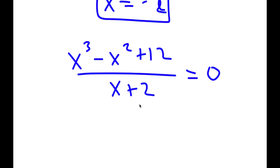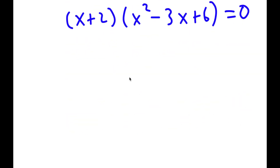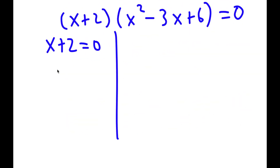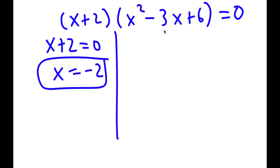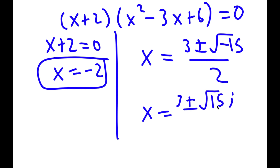I'm going to divide the polynomial by x plus 2, because if I plug in negative 2 for x, negative 2 plus 2 is 0. Dividing gives (x plus 2)(x squared minus 3x plus 6) equals 0. This gives two equations: x plus 2 equals 0, which gives x equals negative 2 as already found, and x squared minus 3x plus 6 equals 0. Applying the quadratic formula gives x equals 3 plus or minus the square root of negative 15, all over 2, which equals 3 plus or minus the square root of 15 times i, over 2.